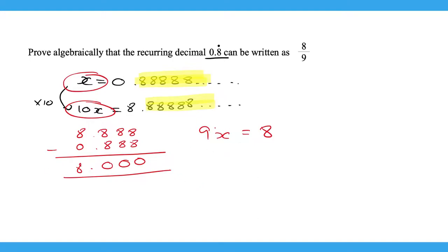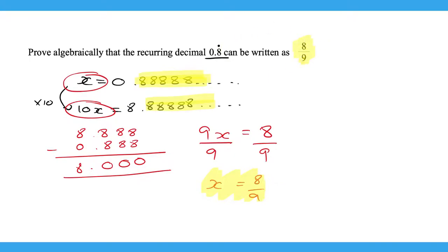Now to get x by itself, we can divide by 9. So we divide by 9 on both sides and we get x is equal to 8/9. And there, as you can see, we have proved that that recurring decimal is the same as 8/9.